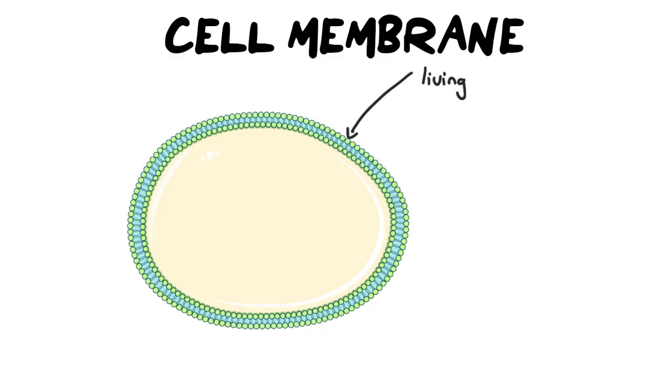It needs to be alive because it maintains what enters and what exits out of the cell. And this ability to do so is called selectively permeable. Selectively means it gets to decide what comes and goes in and out of the cell, and permeable means a substance can basically diffuse or move through it.